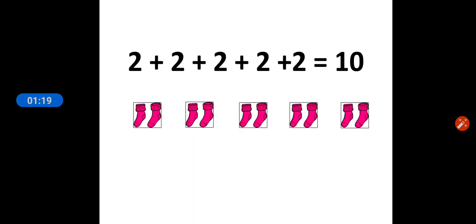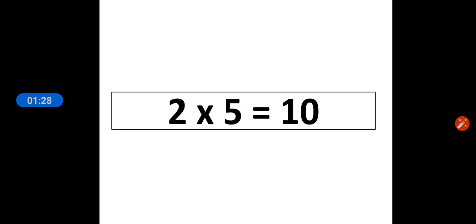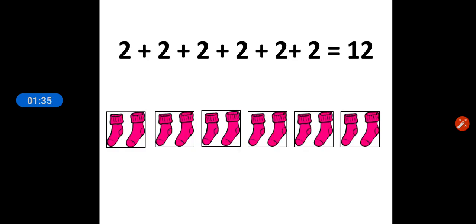As you see students, in addition it seems difficult to write two plus two plus two plus two and then get the answer. So we can simplify it in tabular form, like two fives are ten. For the six pairs we will write two sixes are twelve.